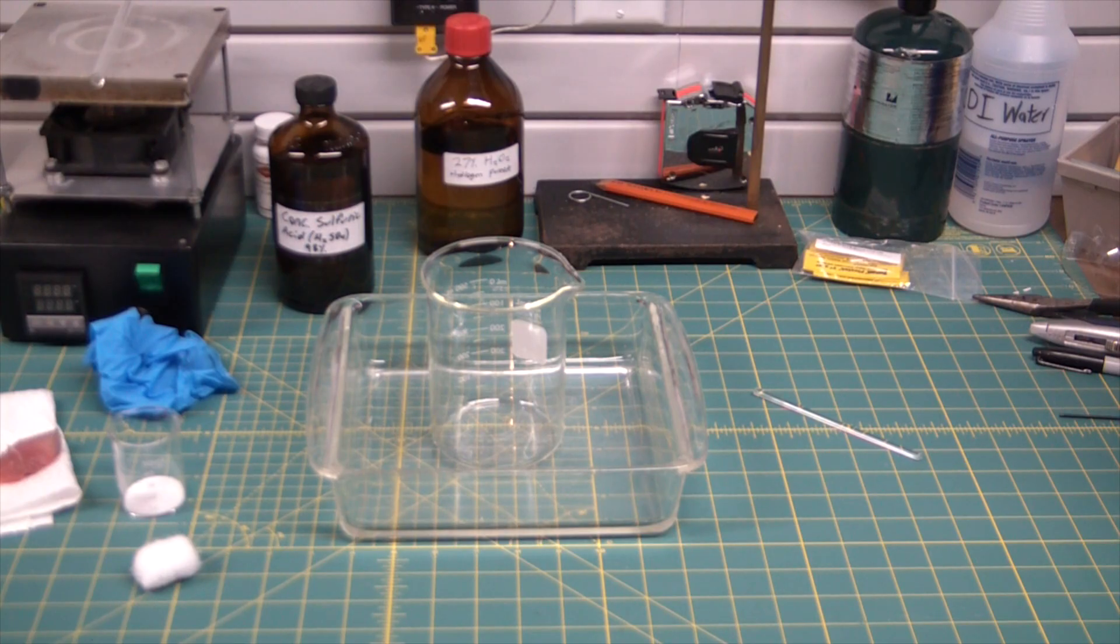Many of you guys know it as piranha solution or piranha etch. It's what chemists use to clean nasty organic stains and chars and that sort of stuff off of their glassware. It's what the electronics industry uses to clean their silicon wafers of silk screening. But today we're gonna play around a little bit with this stuff in hopefully a safe and controlled way.